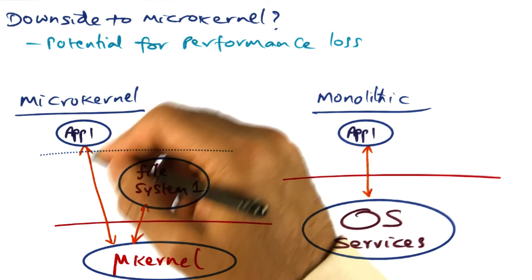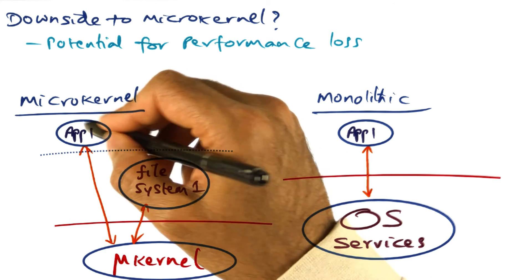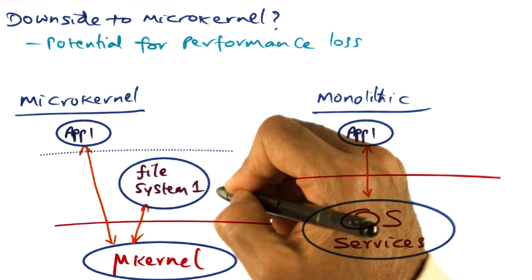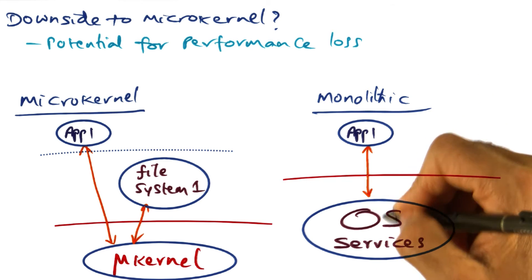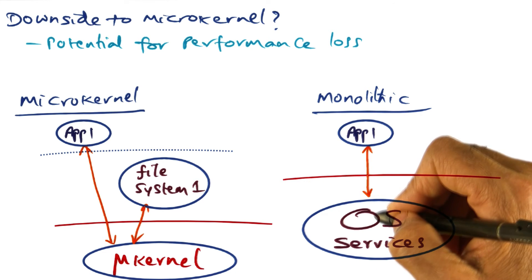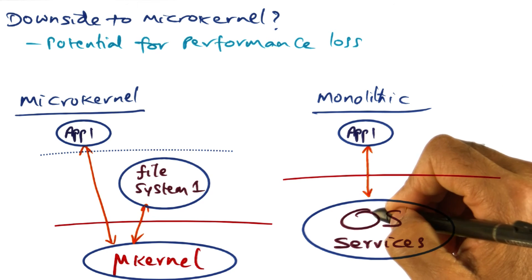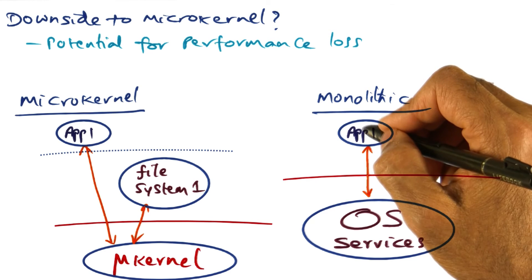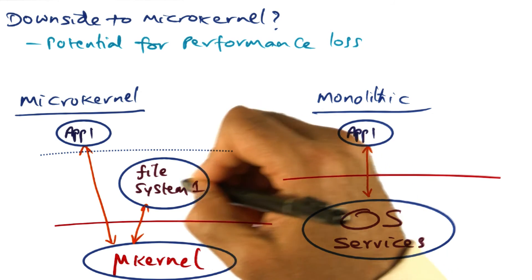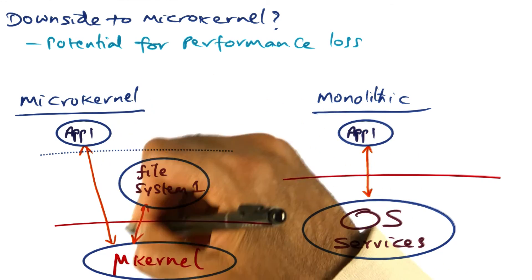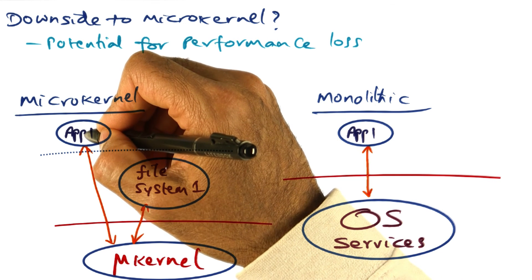So what that means is that with this structure, there is a potential that we may have to switch between the address spaces of the application and many services living on top of the microkernel. Whereas in the case of the monolithic structure, there are only two address space switches — one to go from the application into the operating system, and the other to return back to the application. Whereas in a microkernel-based design, there could potentially be several address space switches depending on the number of servers that need to be contacted in order to satisfy one system call emanating from the application.